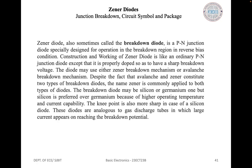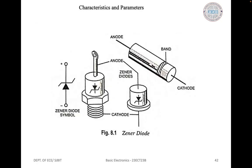Although zener and avalanche are two different types of breakdown, the name zener diode is commonly applied to all breakdown diodes. Coming to the circuit symbol and packages, here we have the zener diode. We will now look at the characteristics and parameters.